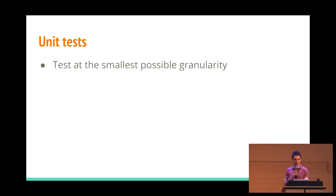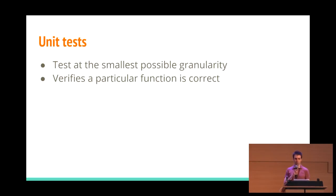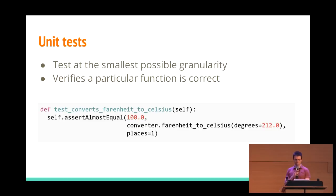Before we get any further, just to clarify on semantics, I'm going to be talking mostly about unit tests. A lot of these techniques will apply to various kinds of testing, but they apply best to unit tests. We're going to keep talking about unit tests just to keep things concrete. Unit tests, as Andy talked about yesterday, are tests at the smallest level of granularity — testing that a particular function is correct. So if we had a function called Fahrenheit to Celsius, here's a simple unit test: you'd pass it 212 degrees Fahrenheit and expect the answer is 100 degrees Celsius.